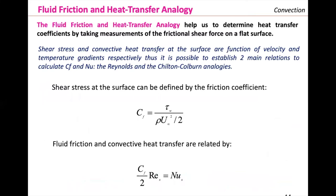We are going to study the friction and heat transfer analogy. This analogy helps us to determine the heat transfer coefficient — the H value — by taking measurements of the frictional shear force on a flat surface. The shear stress and convective heat transfer at the surface are a function of the velocity and temperature gradients respectively. We can establish two main relationships to calculate the friction coefficient and the Nusselt, which will help us get the H values: the Reynolds analogy and the Chilton-Colburn analogy.